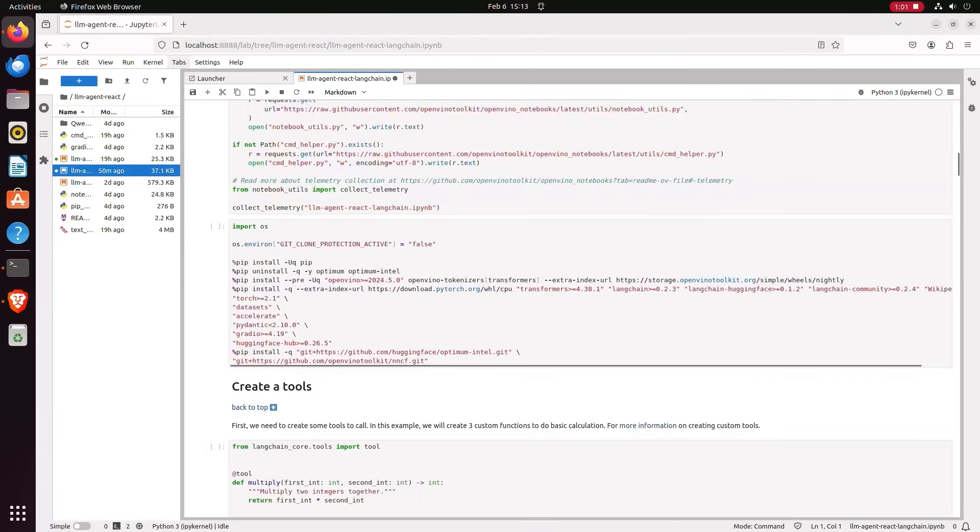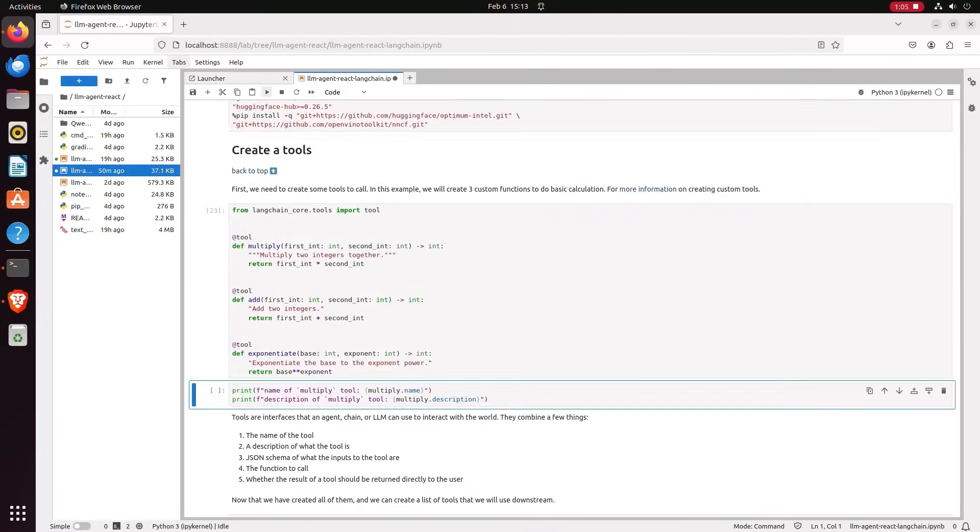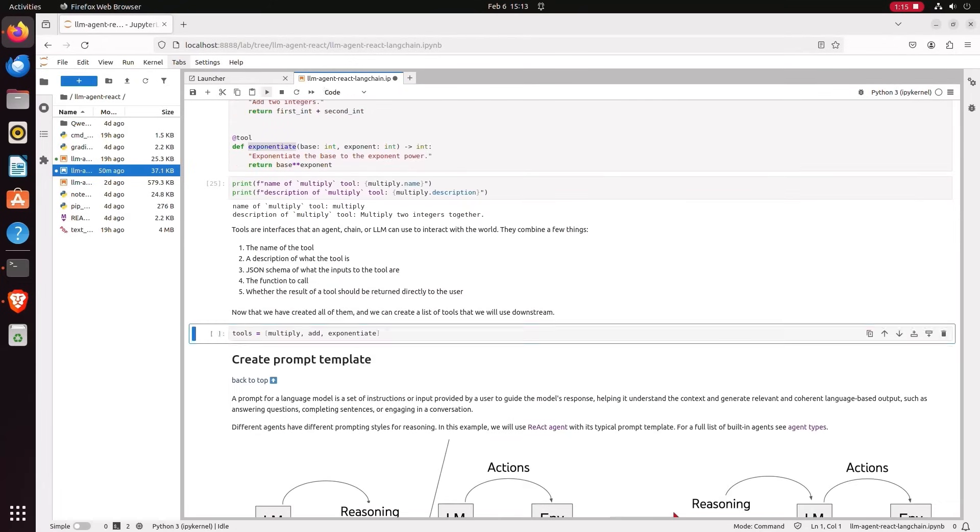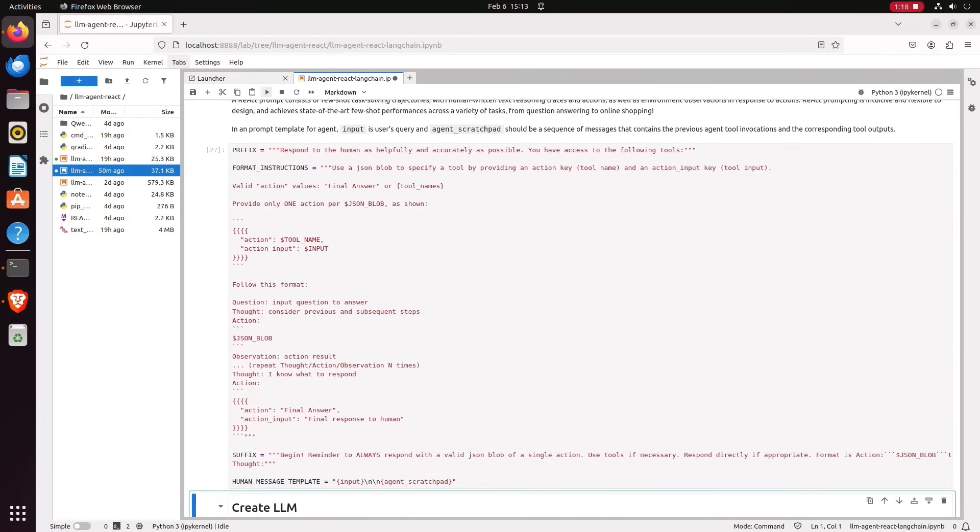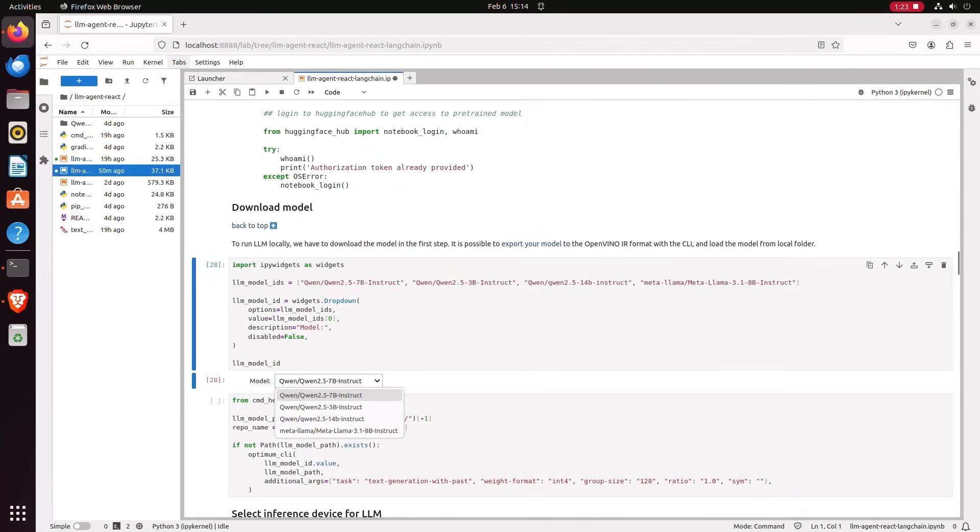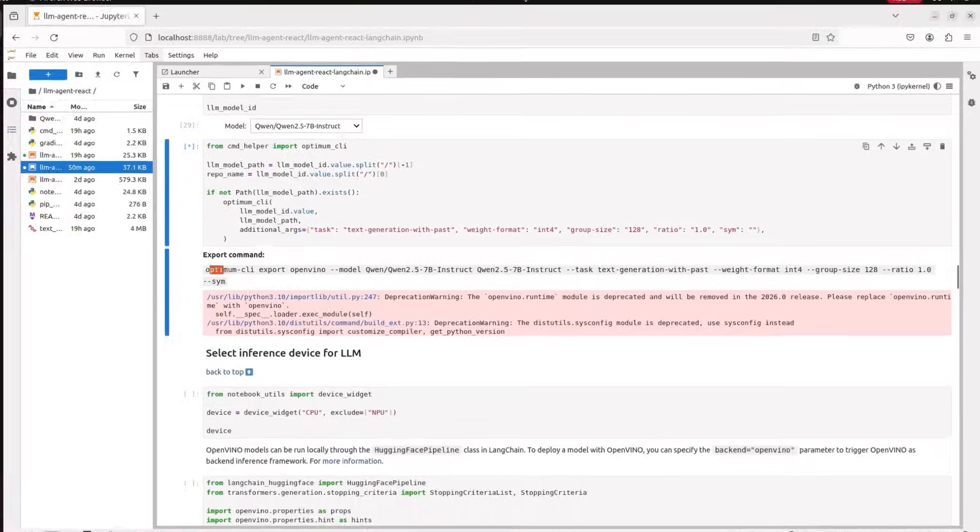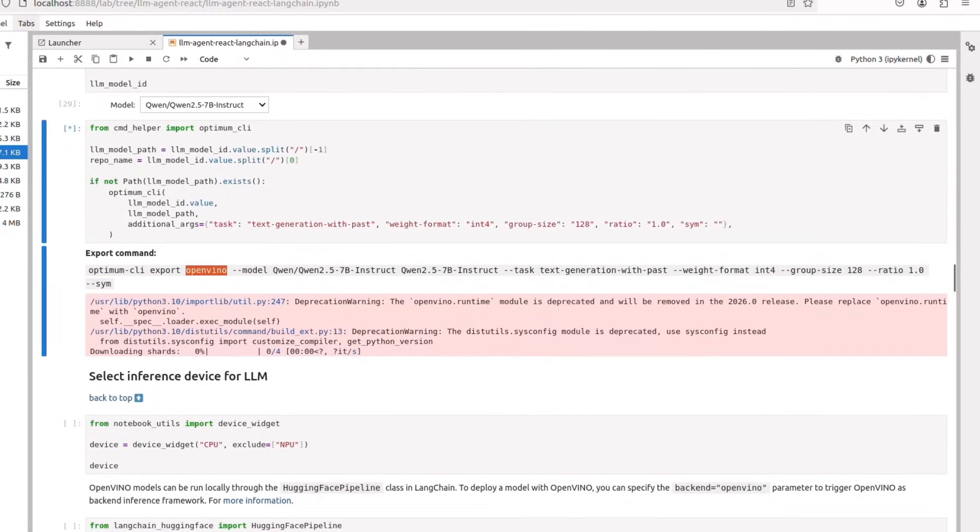I'll just run the cells one by one. First ones are just installation. Here, we define the tools. All kind of definitions and instructions for the prompt. Choose a model. And use Optimum CLI to download the model directly from HuggingFace to OpenVINO format. And the data will be int4. This can take a while. And the model is here.